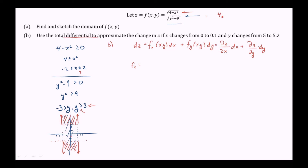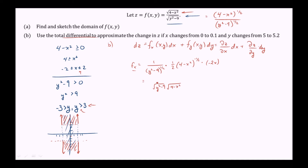First we find the partial derivative with respect to x. We rewrite the function as (4 minus x squared) to the one-half, divided by (y squared minus 9) to the one-half. Treating y as a constant, we pull out 1 over (y squared minus 9) to the one-half, and differentiate (4 minus x squared) to the one-half. This gives one-half times (4 minus x squared) to the negative one-half, times the inner derivative negative 2x, which simplifies to negative 2x divided by 2 times the square root of (y squared minus 9) times the square root of (4 minus x squared).